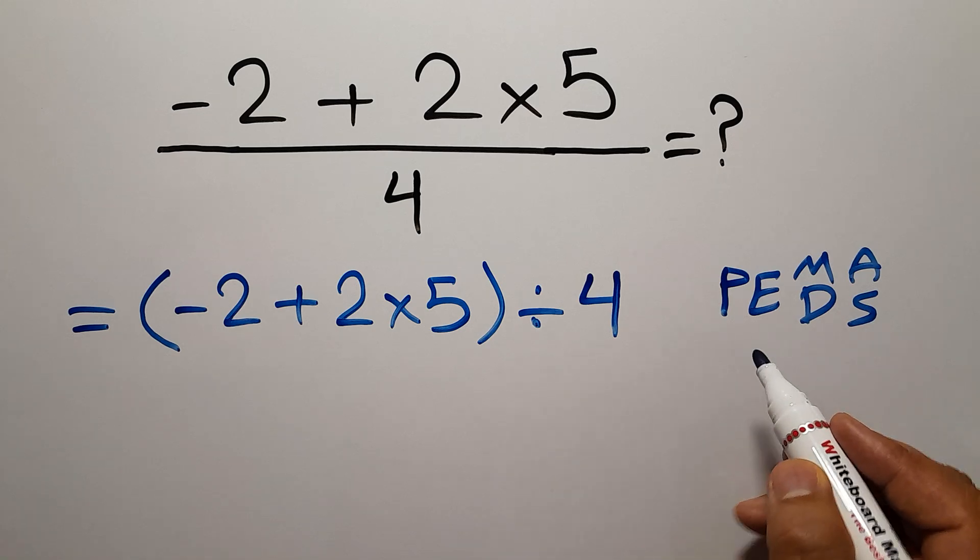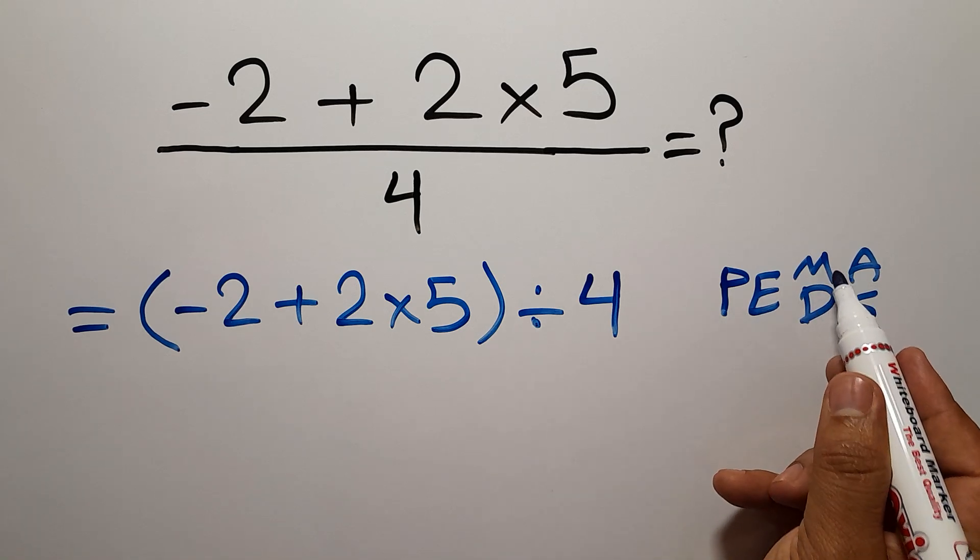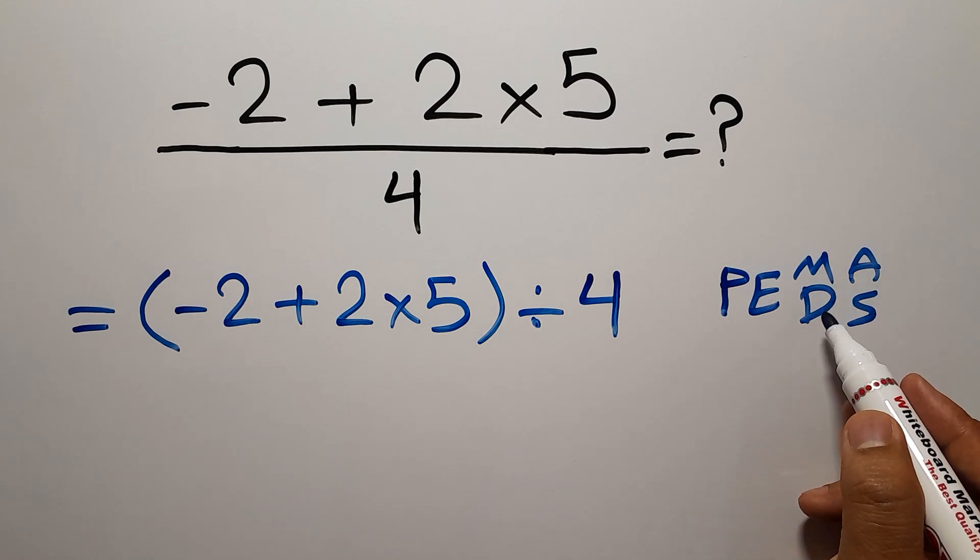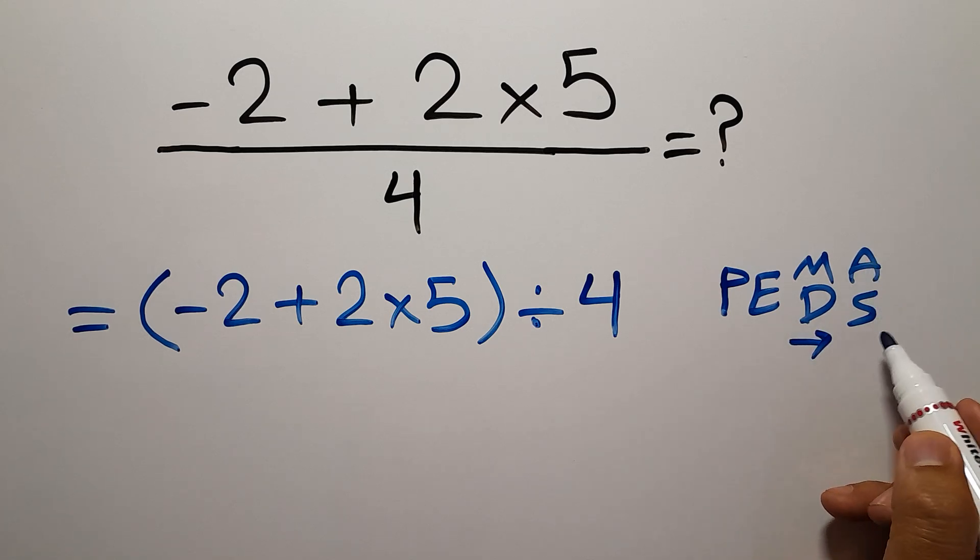First we have to do parentheses, then exponents, then multiplication or division, and finally addition or subtraction. Remember that multiplication and division have equal priority and we have to work from left to right. The same applies to addition and subtraction.